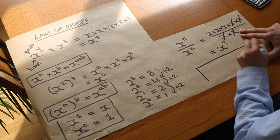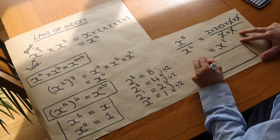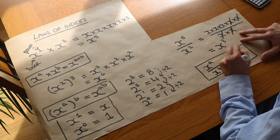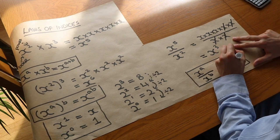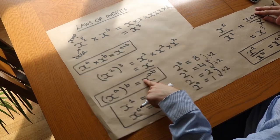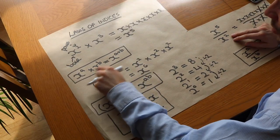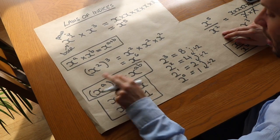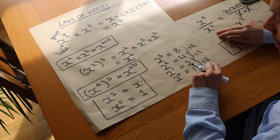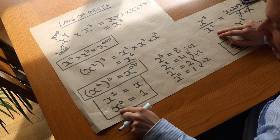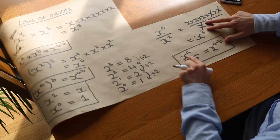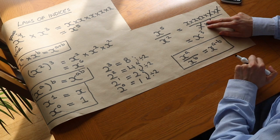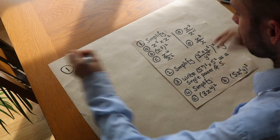You can see we've subtracted these powers: five minus two is three. So that gives us our last law of indices in this video: if you have x to the power of a divided by x to the power of b you get x to the power of a minus b. In summary: when multiplying power expressions add the indices; when raising a power to a power multiply the indices; x to the power of one is itself; anything to the power of zero is one; and when dividing power expressions subtract the powers. Let's use that to solve these questions.